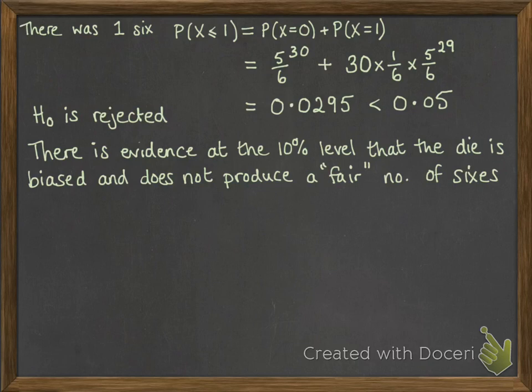You may also be asked to find where the critical values are, and you'd need to test out values on either end to see where your acceptance region would be and where your critical region would be as well.